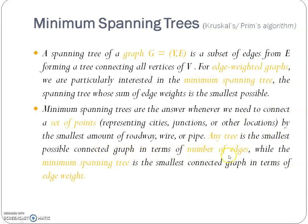Any tree is the smallest possible connected graph in terms of number of edges, while a minimum spanning tree is the smallest connected graph in terms of edge weight. Here we'll see one example for the spanning tree. I have a graph where 1 is connected with 2, 2 with 3, 3 to 4, 4 to 5, and 5 to 1. This graph consists of 5 nodes connected with edges, and I can represent it as G of V comma E.